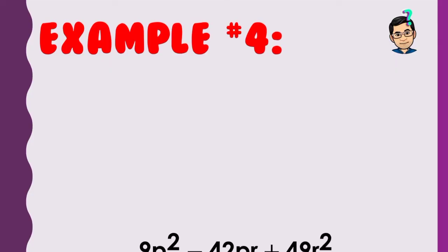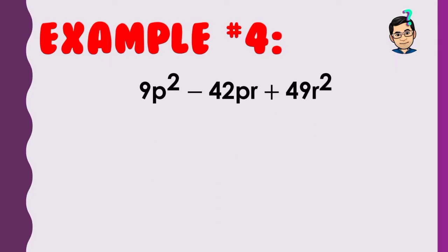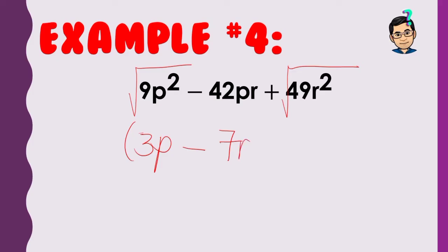Example 4: 9p² − 42pr + 49r². Square root of 9p² is 3p. Follow the sign of the middle term: minus. Square root of 49r² is 7r. Check: 3p times negative 7r is −21pr, times 2 is −42pr — correct. The factored form is (3p − 7r)².